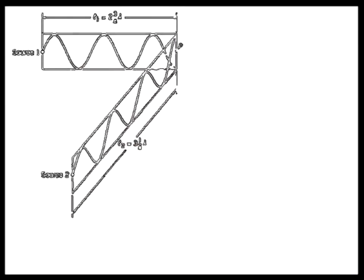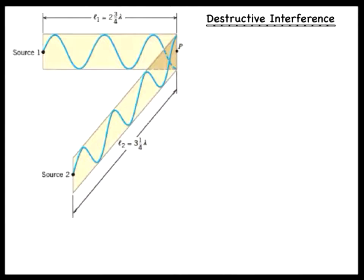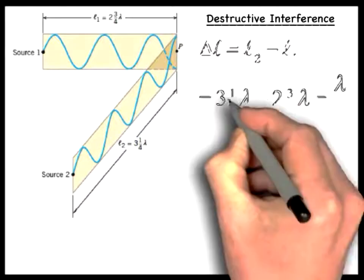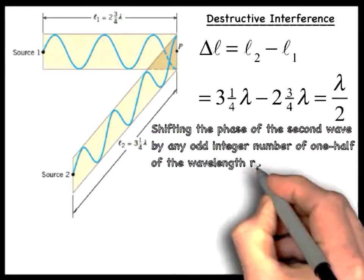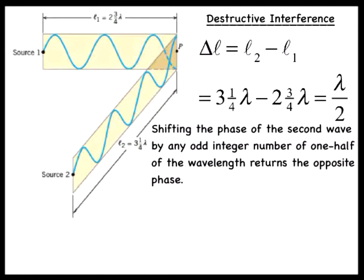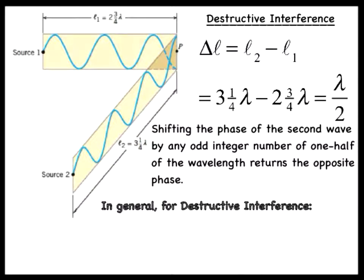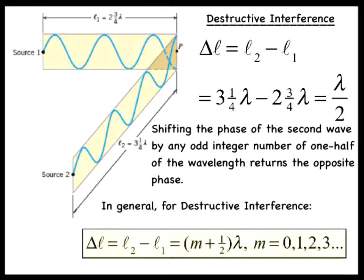In case two, the optical path length difference is delta L equals L2 minus L1, which is equal to one half of the wavelength. Shifting the phase of the second wave by half a wavelength returns the opposite phase to the original wave. In fact, shifting the phase of any wave by an odd integer number of one half of the wavelength returns the opposite phase. For example, if the two waves begin in phase and the second wave travels an additional distance of one half of the wavelength, then the waves will arrive at point P being out of phase, resulting in destructive interference. In general, when the waves start out in phase, destructive interference will result at point P whenever the distances differ by an odd integer number of one half of the wavelength.